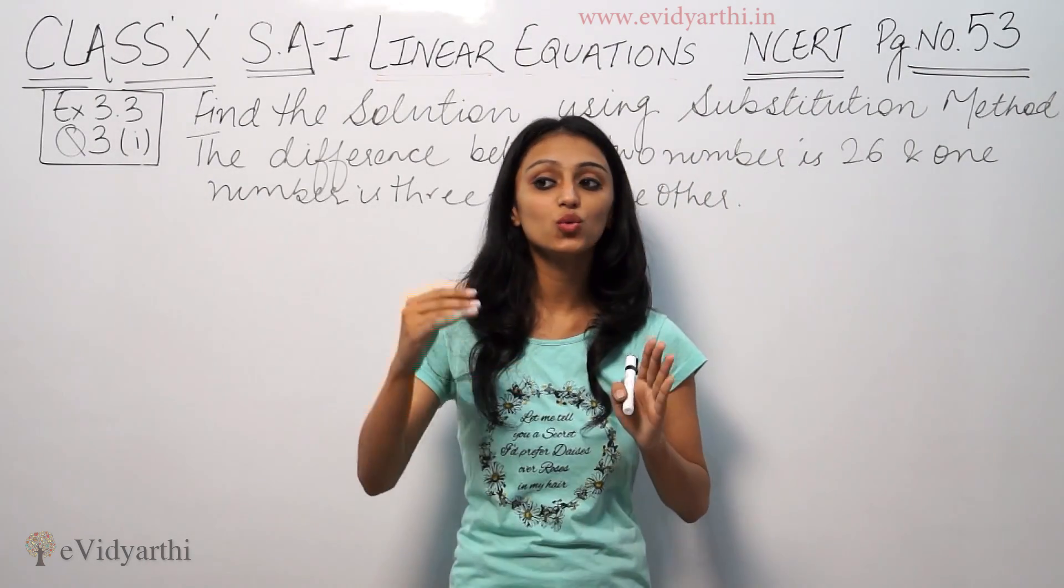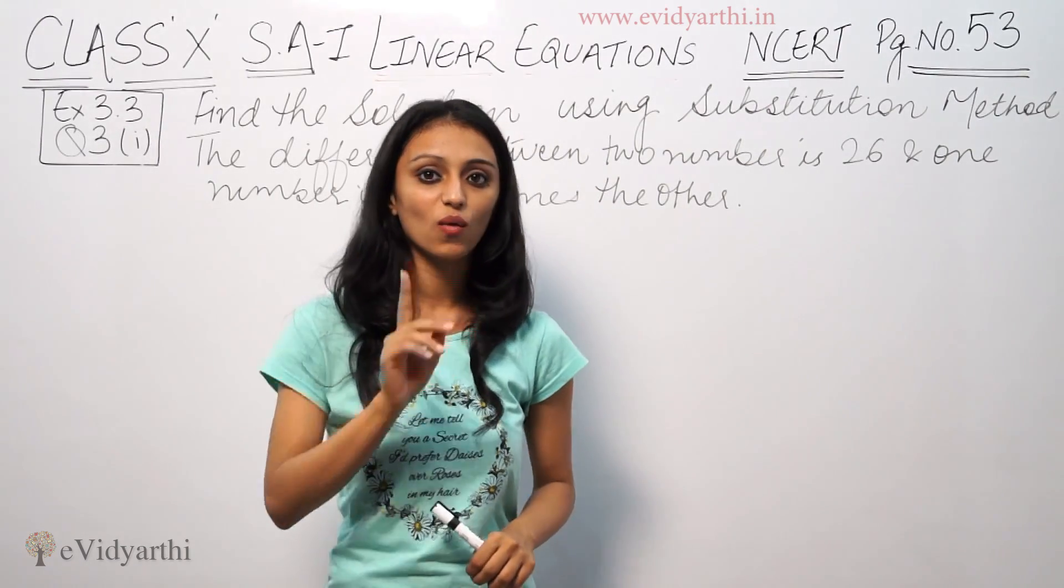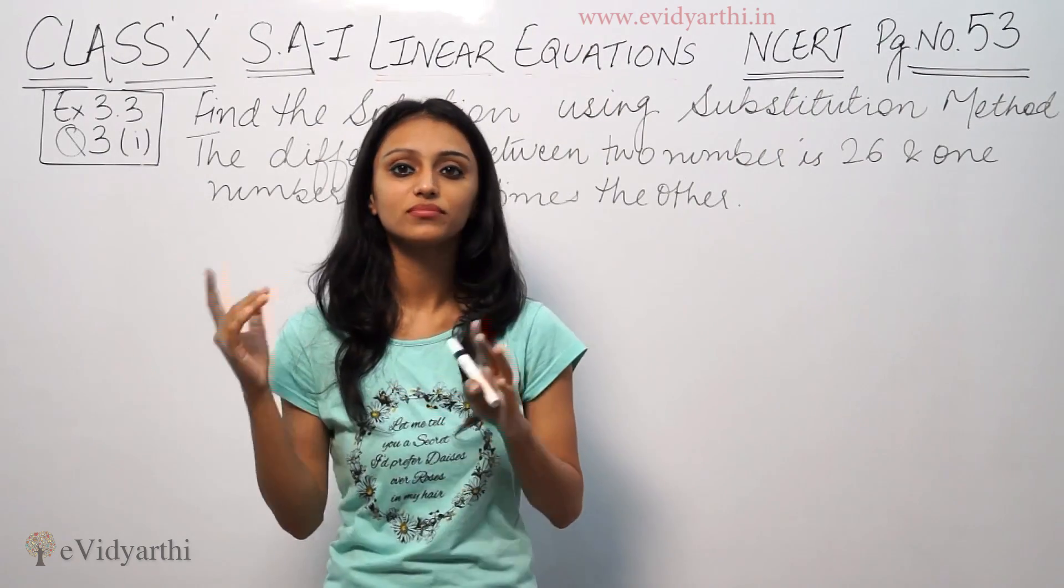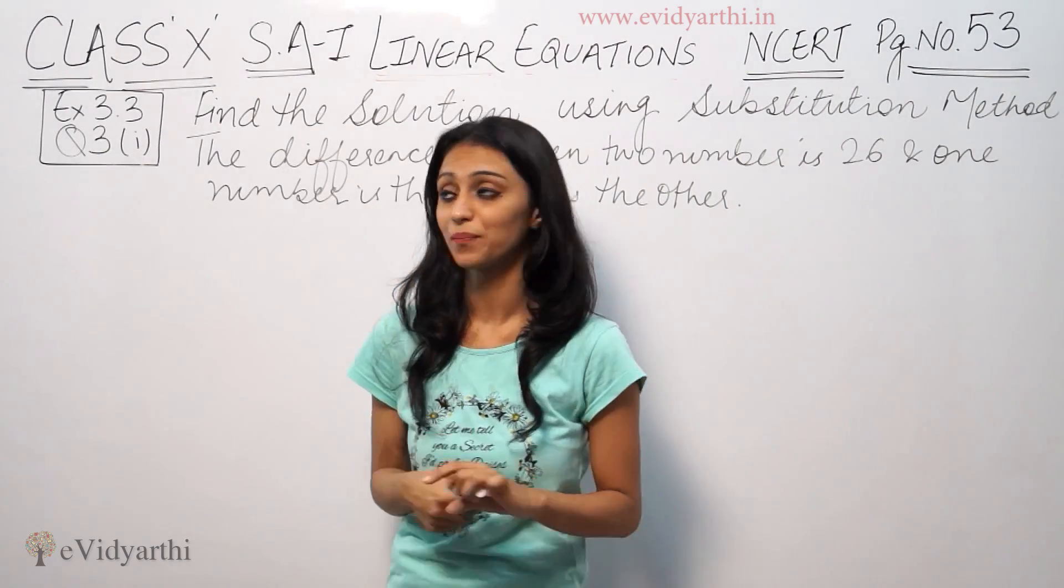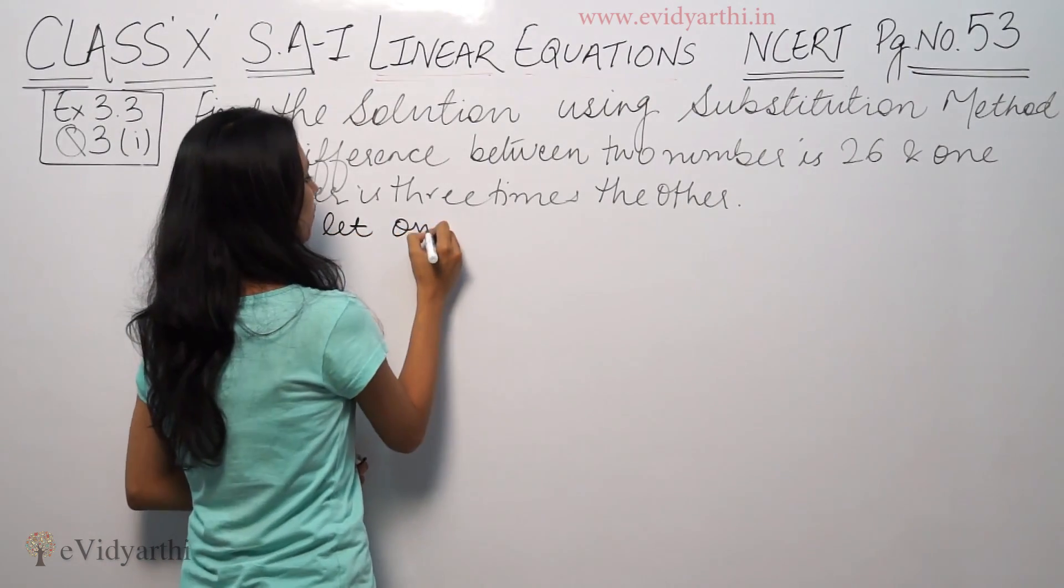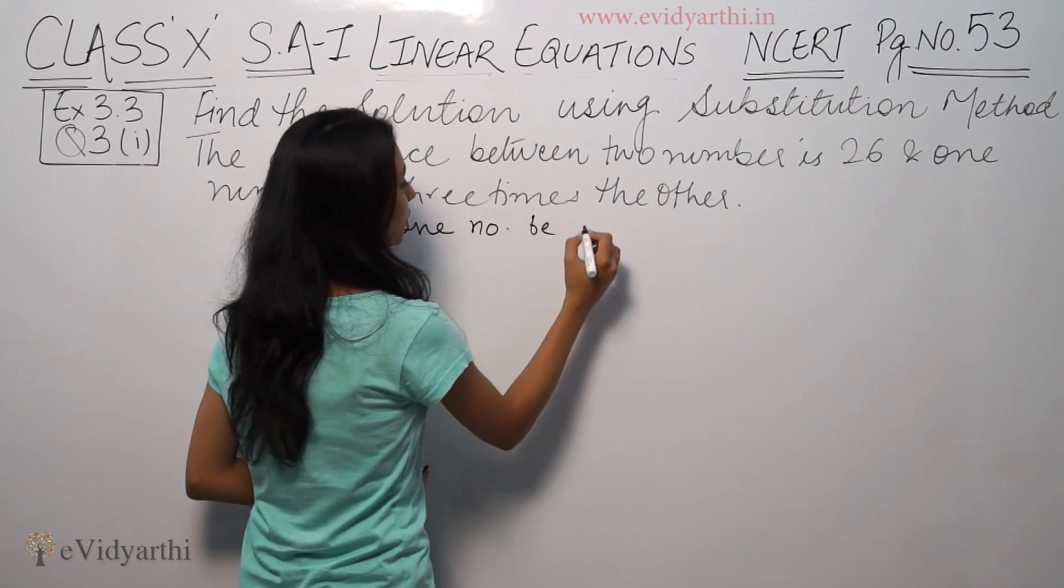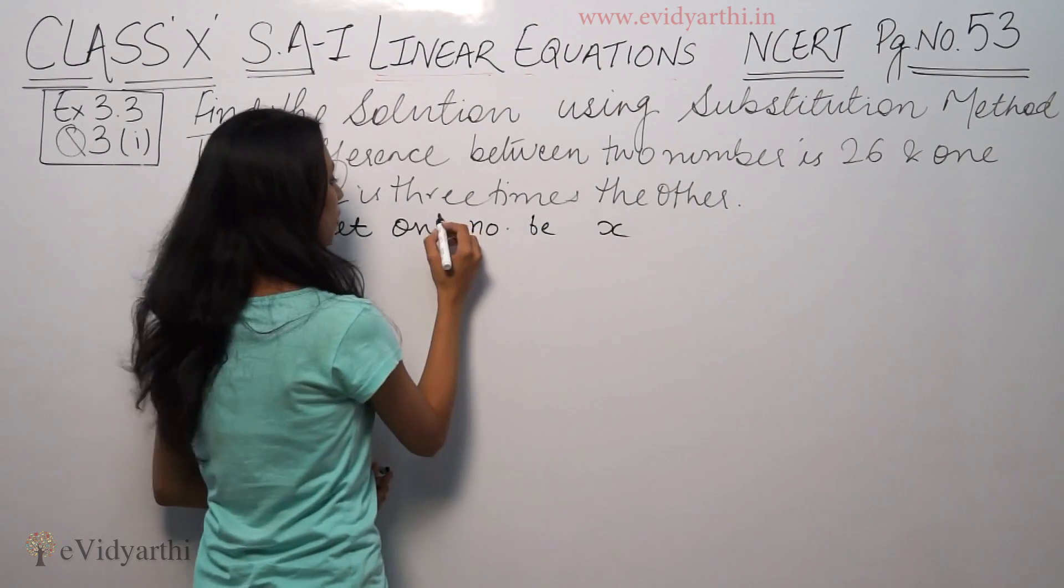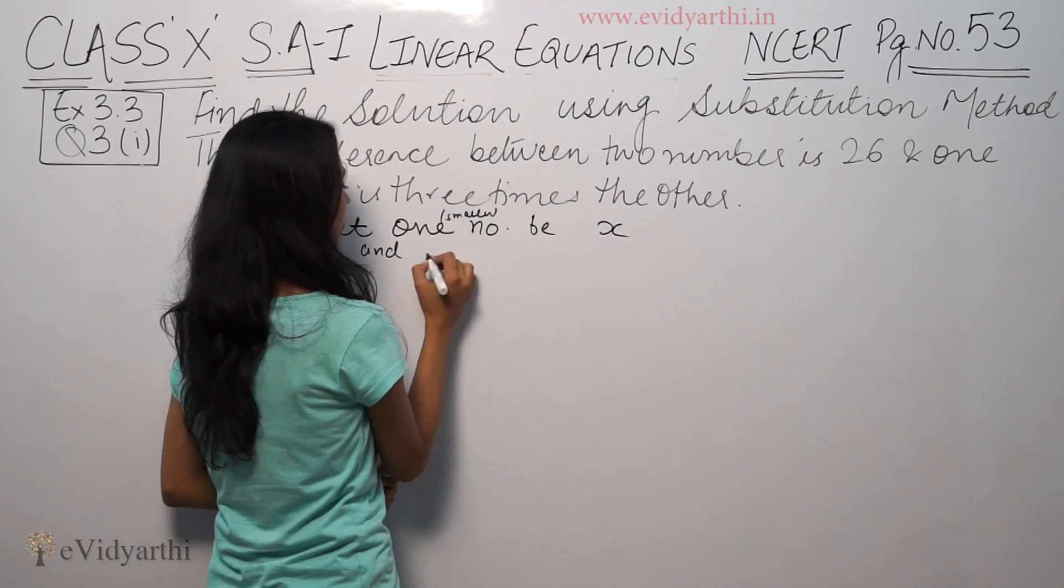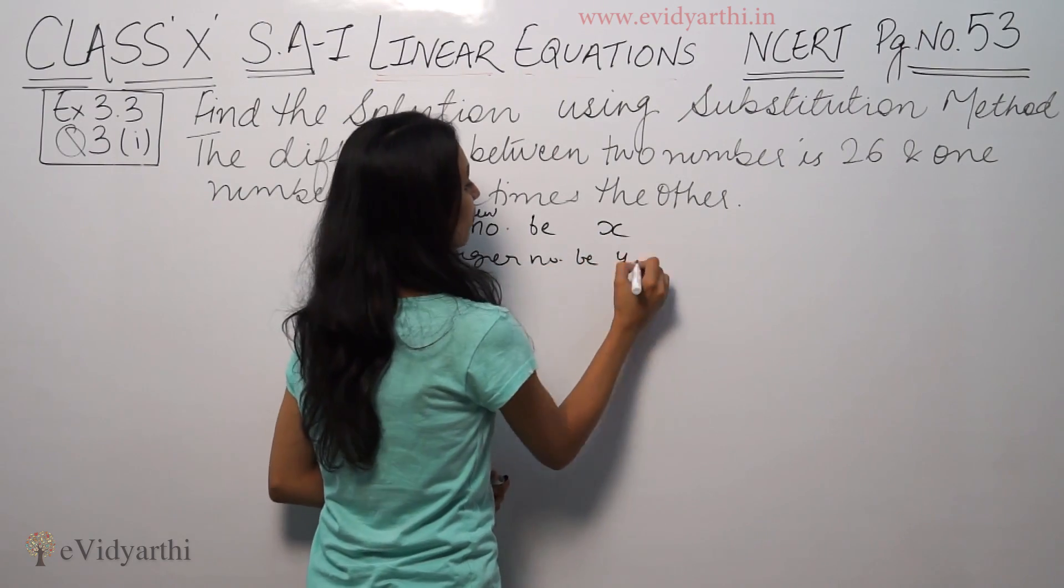Let's suppose that one number is 1 and the other is 3. If one number is 2, the other is 6. You can see the pattern - one number is three times the other. Let's suppose the smaller number is x and the larger number is y.